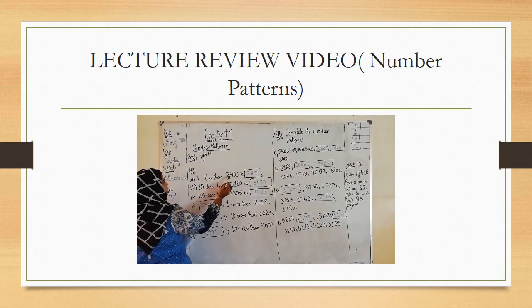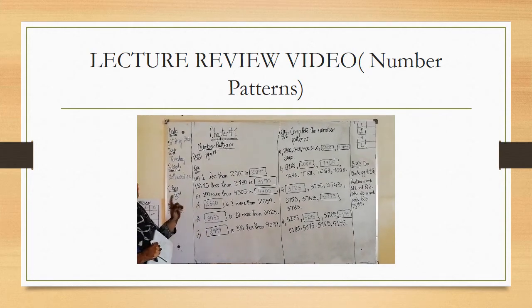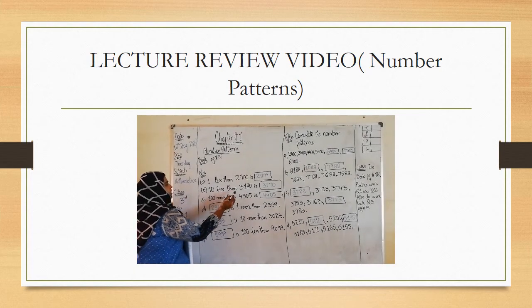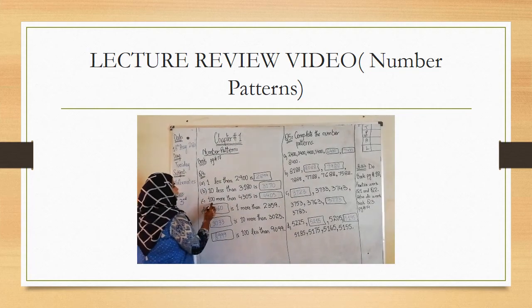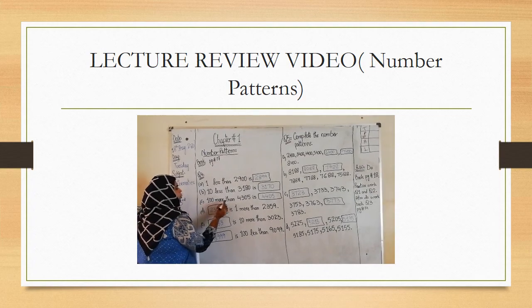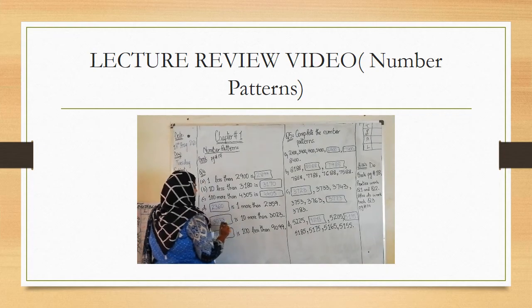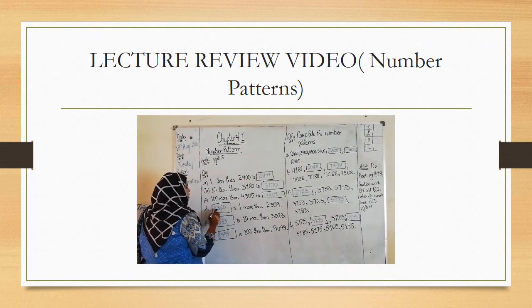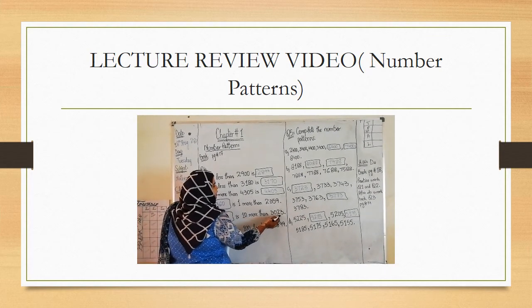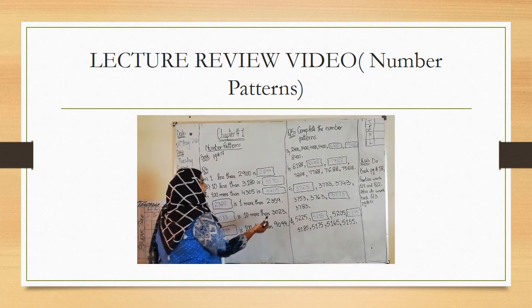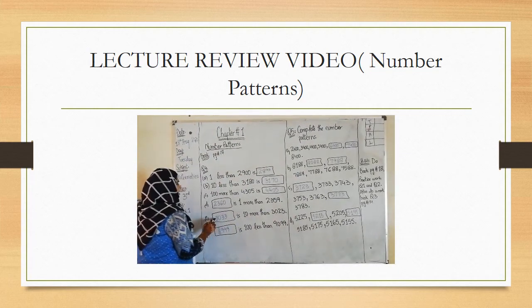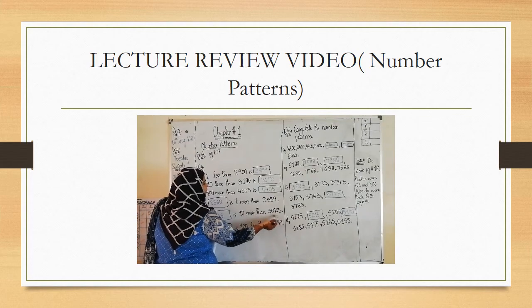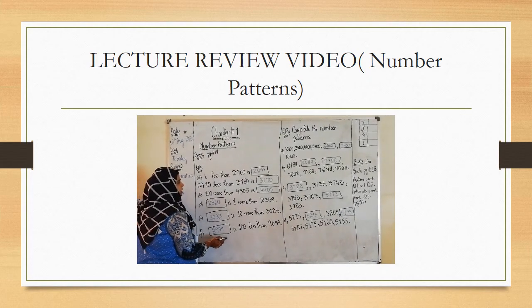The first part is 1 less than 2900 is - so we have to subtract 1 from 2900, that is 2899. Second part is 10 less than 3180, so it is 3170. 100 more than 4305 is 4405. After 3359 comes 3360. 10 more than 3023 - after 23, if we add 10, it is 33, so the answer is 3033. 100 less than 9099 - we have to subtract 100 from 9099, that is 8999. Hope you understand it.